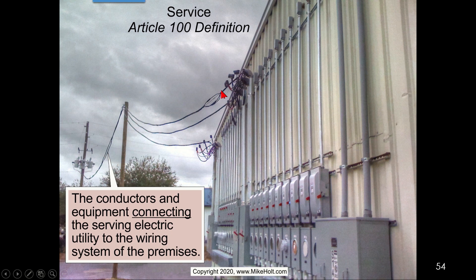Our wiring comes in, and this is the equipment — this is the service equipment — this is our whole service right here. The service equipment ends at the main means of cutoff. You can see the main means right here — those two big disconnects right there. So you have service from the utility, the two main disconnects, and that is the service equipment.